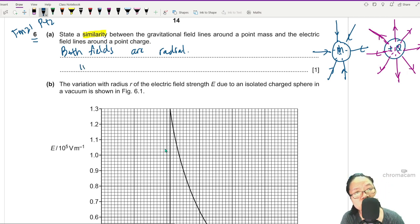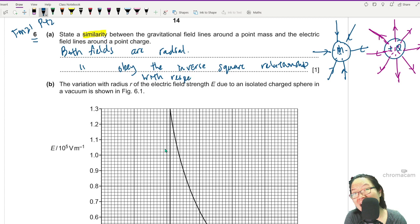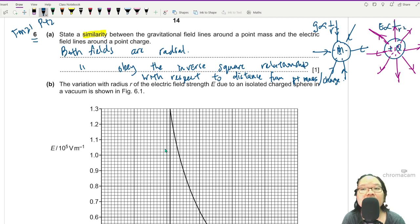I can write another one: both fields obey the inverse square law relationship with respect to distance from the point mass or point charge. I.E. g is inversely proportional to r squared and electric field is inversely proportional to r squared. Enough, they just want one. The easiest one to write is the first one, they are radial.